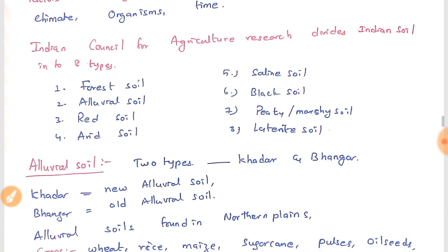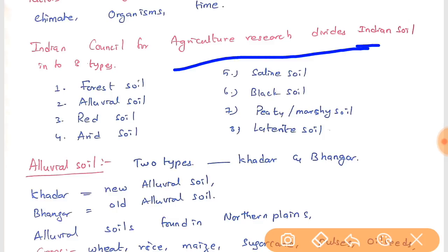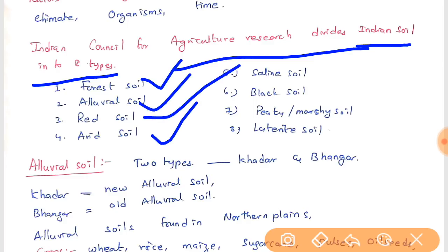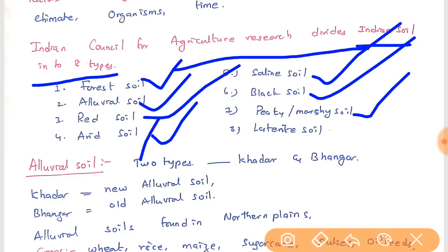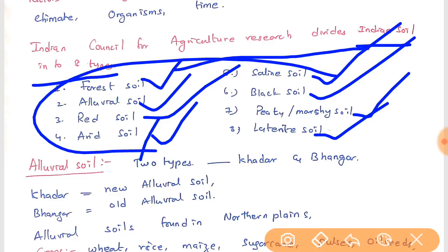According to the Indian Council for Agricultural Research, Indian soil is divided into eight types. We are seeing the types of soil from the view of agriculture, which is the important angle for examination — not the view of a geologist, but of agricultural researchers. The Indian Council has identified eight different types of Indian soils for the sake of vegetation: forest soil, alluvial soil, red soil, desert soil, saline soil, black soil, peaty or marshy soil, and laterite soil.